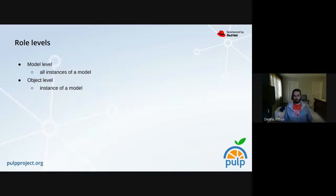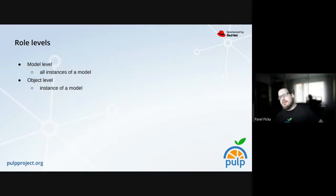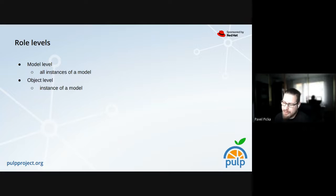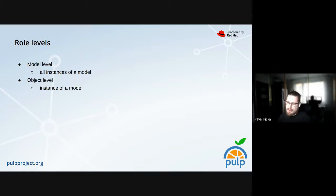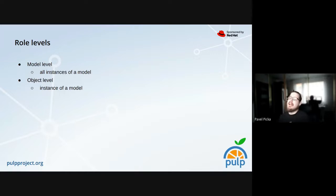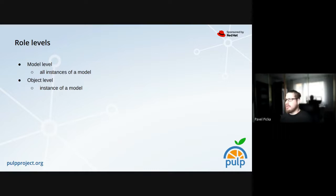When you say a user has a role, that's actually the user has a role assignment — it has to be assigned. The role exists without being assigned to any user. There is an exception at the object level: some permissions under a role don't make sense for just one object. For example, 'create' — you can't say you are able to create only this one specific object.